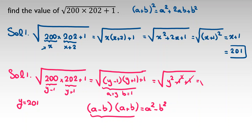You can cancel them. It will be square root of y squared, which is y, and y is 201. So we've solved this problem with two solutions.